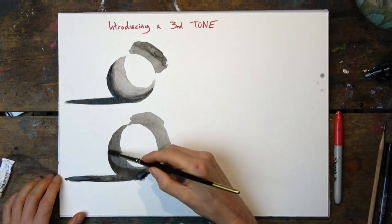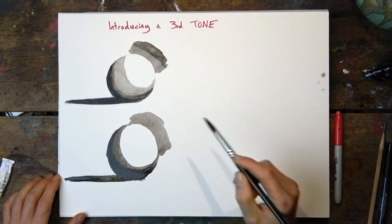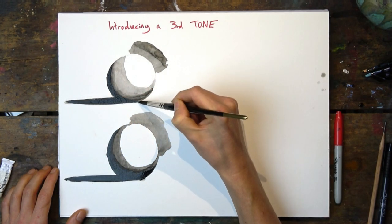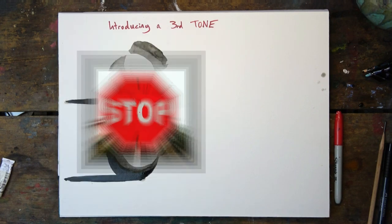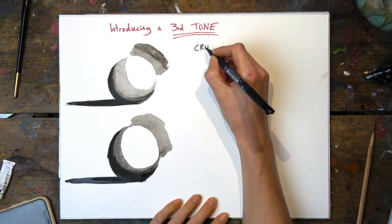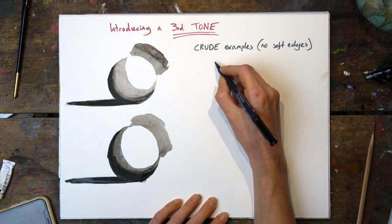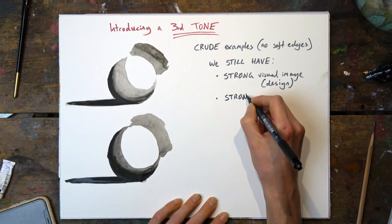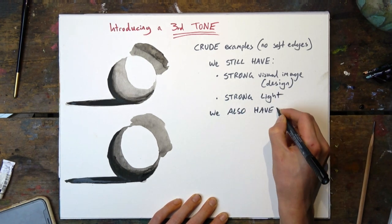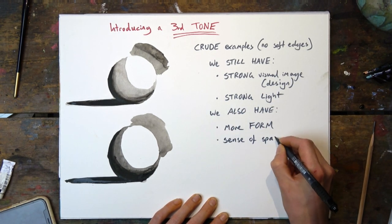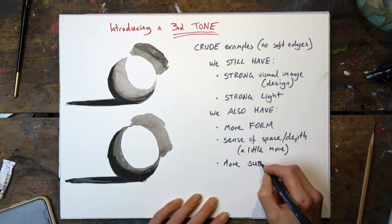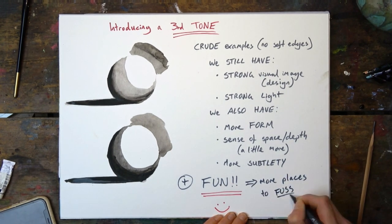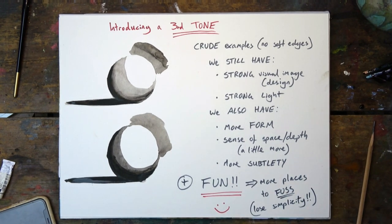There's lots more on realism to come. Also, I purposely softened the edge between the black and the grey on the top ball, but of course this is adding actually a fourth tone, and that's not yet. So although these are quite crude examples and not that realistic, like the two-tone images, we still have a strong visual design, we still have a strong feeling of light, but we also have a stronger feeling of form, more of a sense of space and depth, and a little more subtlety. It's really fun when we start introducing more tones, although it is more places to fuss and more places to lose simplicity.